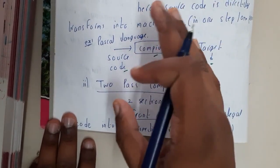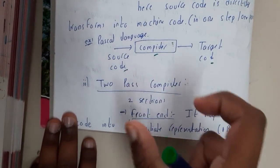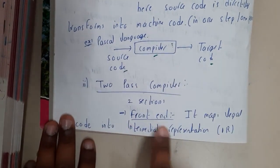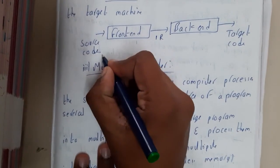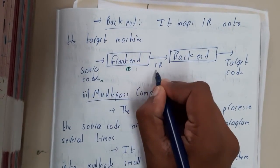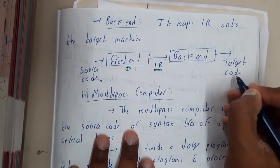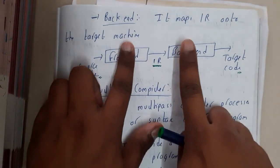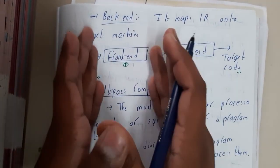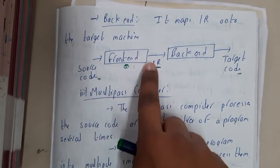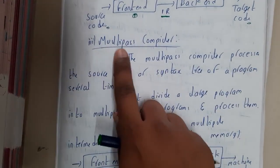So a single pass compiler has only a single medium in between. In a two pass compiler, we divide into two different phases — the front end and the back end. The front end maps the legal code into an intermediate representation. So source code goes into the front end, which converts it into intermediate code, and then this intermediate code is passed to the back end, which gives the output as target code or machine code. These two phases — first pass and second pass — are why it is called a two pass compiler. The back end converts from intermediate representation to target machine code.